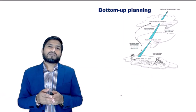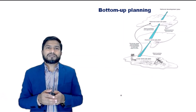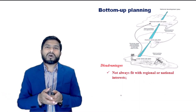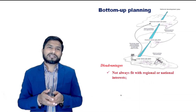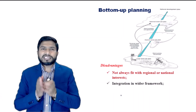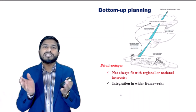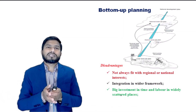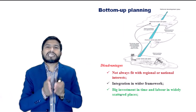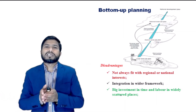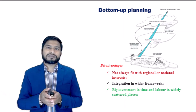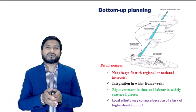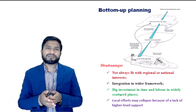Major disadvantages of bottom-up planning: local interests are not always the same as regional or national interests. Difficulties occur in integrating local plans within a wider framework. Limited technical knowledge at the local level means technical agencies need to make a big investment. Local efforts may collapse because of a lack of higher level support.